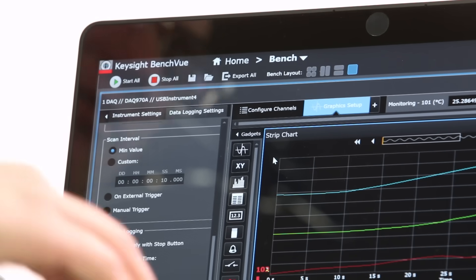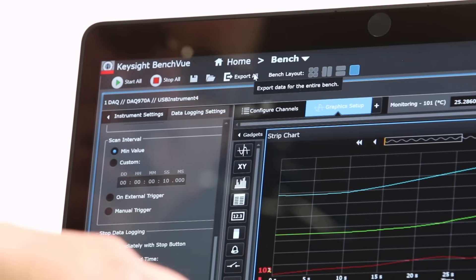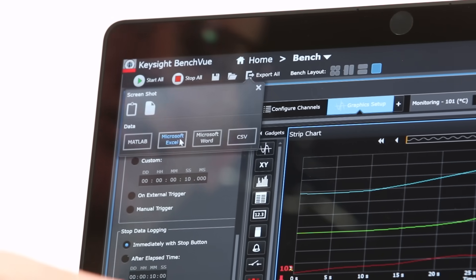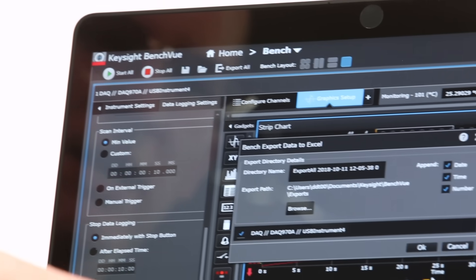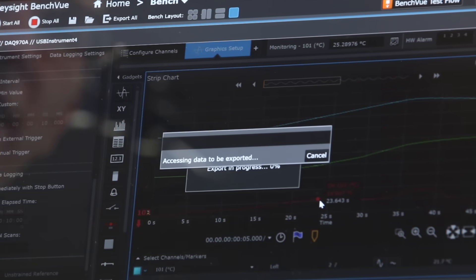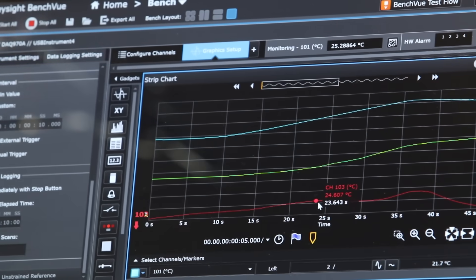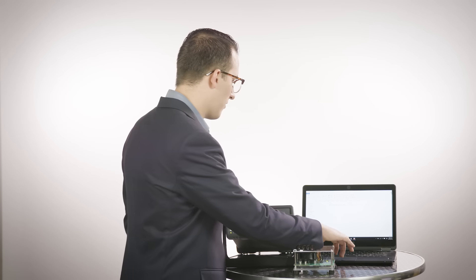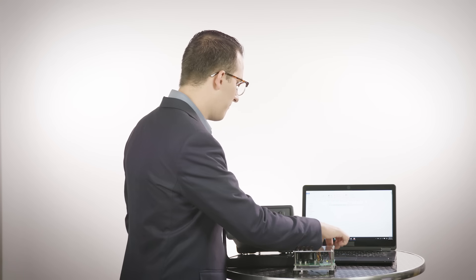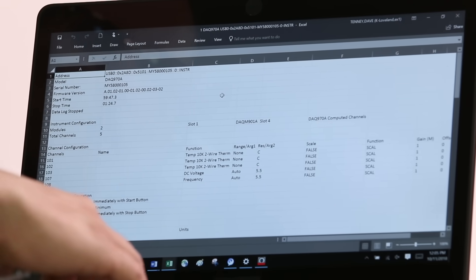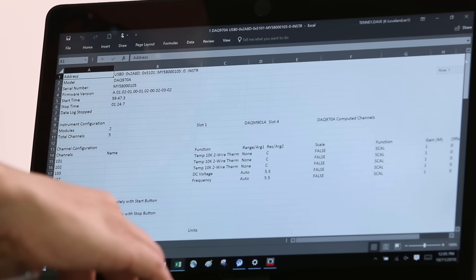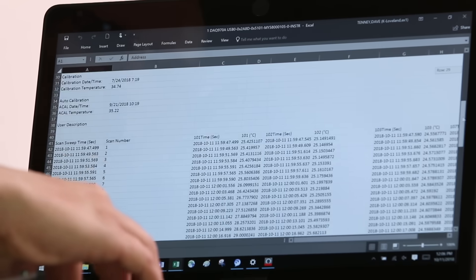So I want to do some post-process analysis in Excel so I'm gonna hit export all and you can see it gives me a couple file options. We're gonna choose Excel and export here and it's gonna automatically save that to an Excel file and open that up in the Explorer. When I go to open this up you can see it has all of my test information here and when I scroll down I have all of my data.